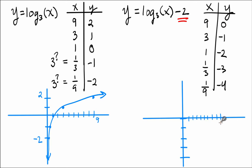First point is 9, 0. Second point: 3, negative 1. Third point: 1, negative 2. Fourth point: 1/3, negative 3. And fifth point: 1/9, negative 4.